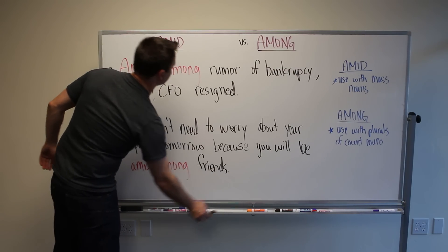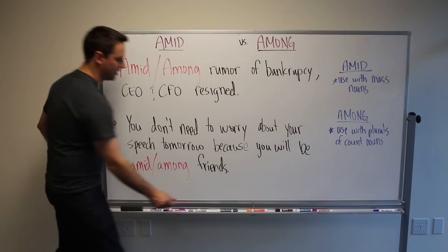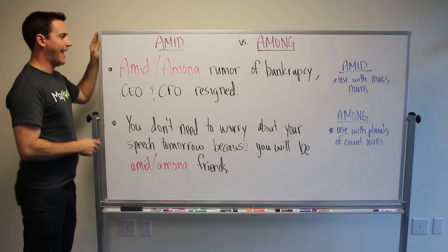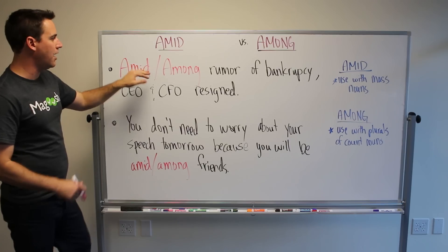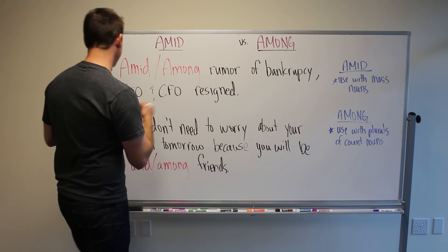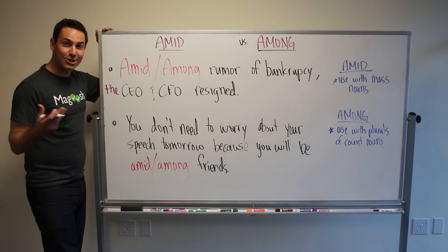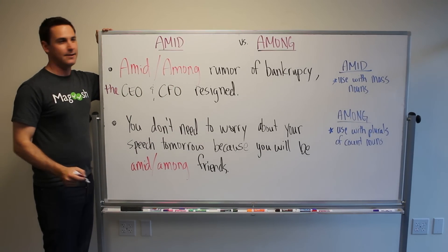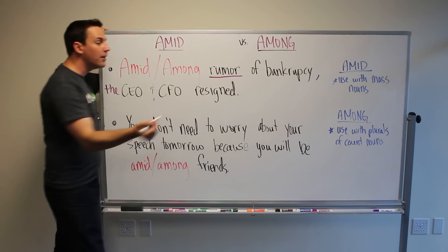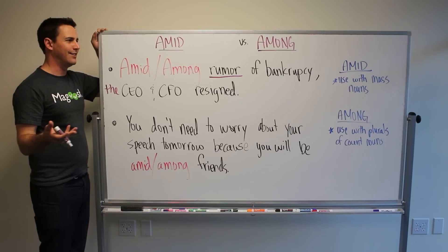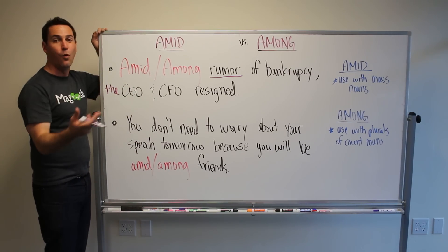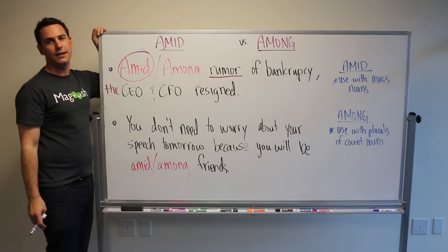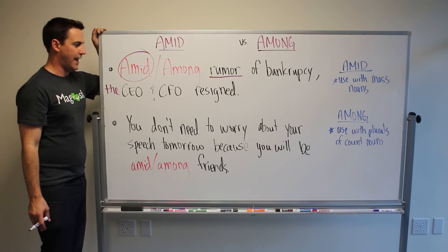If we're looking at these two sentences, we need to think: do I have a mass noun, or do I have the plural of a count noun? So we have: 'amid' or 'among' — rumor of bankruptcy — the CEO and CFO resigned. What we have here is 'rumor.' Rumor is a mass noun, similar to 'talk' — like 'talk of war.' So in this case, we're going to use 'amid.' Amid is correct: 'amid rumor of bankruptcy,' 'amid talk of war' — this is how you want to use 'amid.'